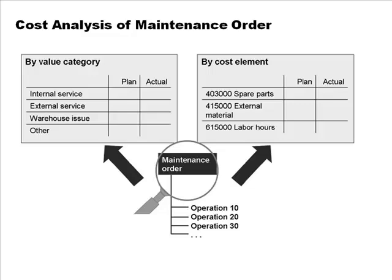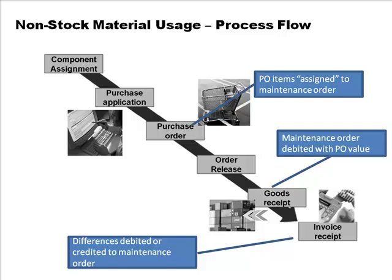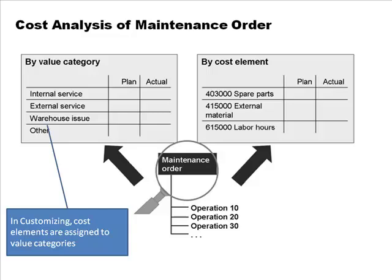Analysis of the maintenance order can be done by value category. After completing a maintenance order you can break up the total cost in different ways — by individual elements such as spare parts, or by value category. Value categories are set in customizing: you create value categories and assign cost elements to them. For example, cost elements included under 'internal service' are defined in customizing. The order then summarizes all cost elements in that way, giving you two different ways to look at cost analysis.